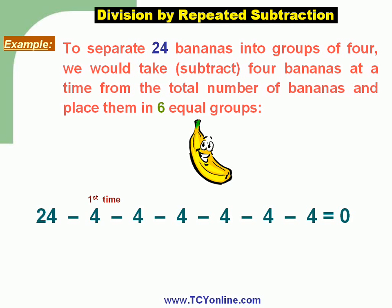Now let's count the number of times we subtracted 4 from 24 to get 0 — and it is 6 times. So that means it is placed in 6 equal groups, and 24 divided by 4 is equal to 6.